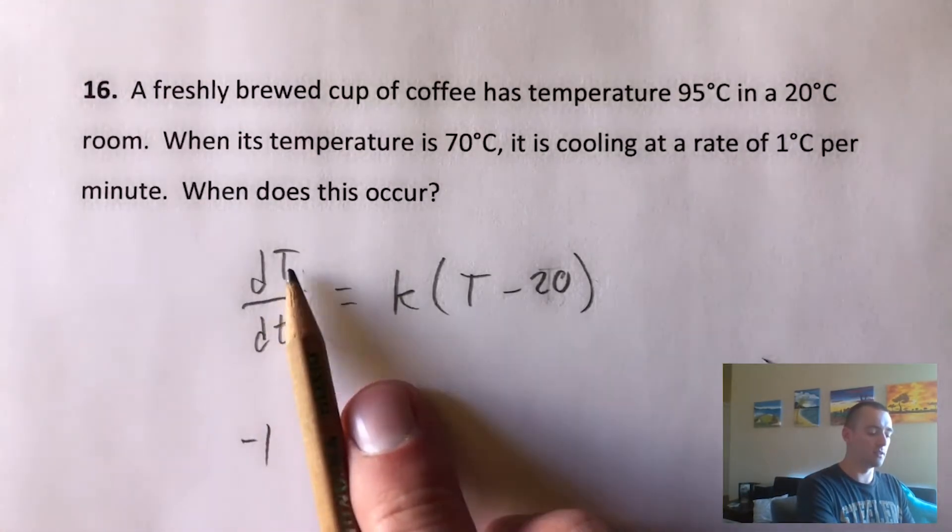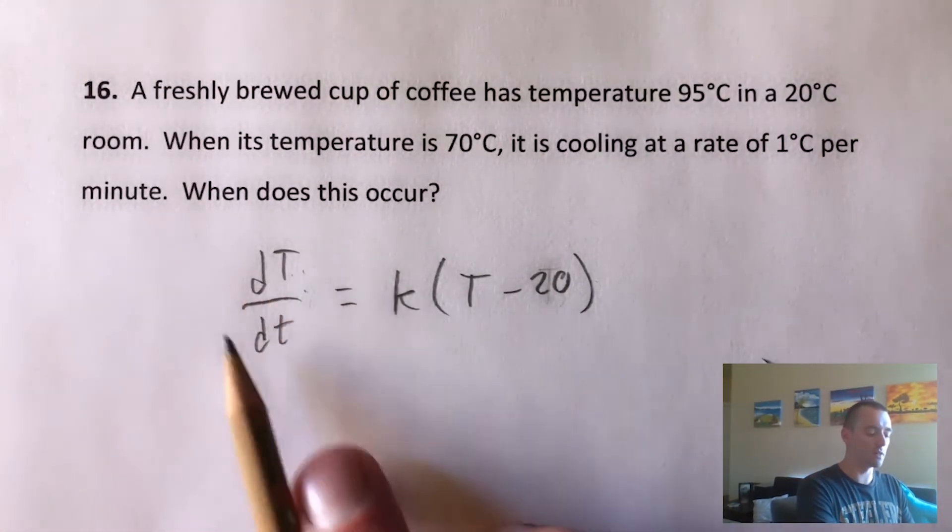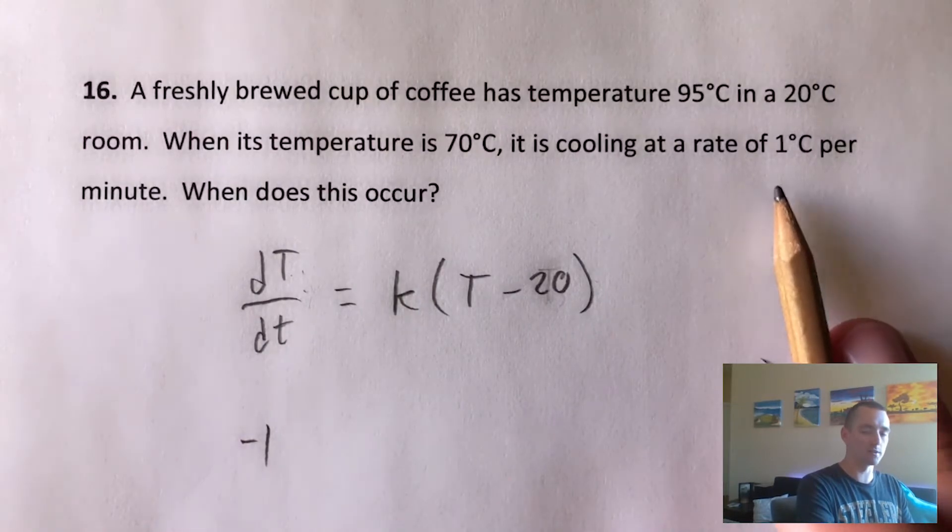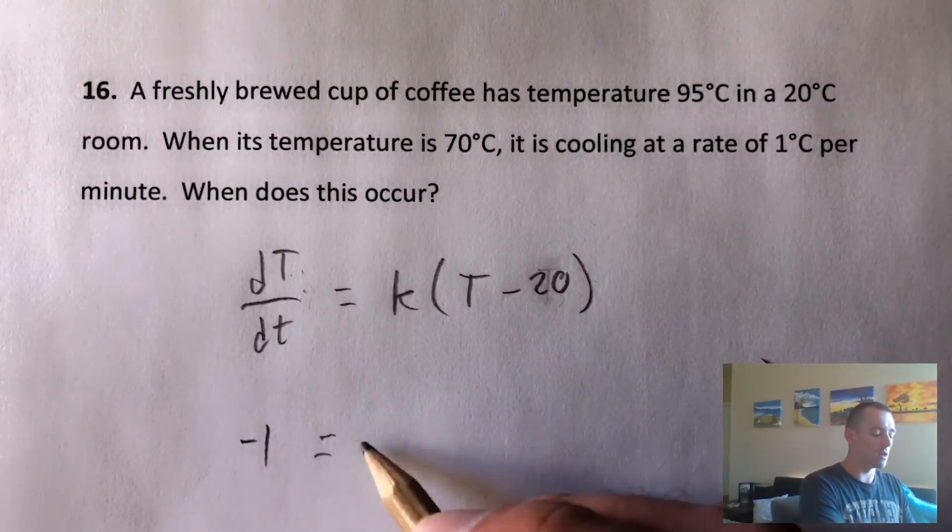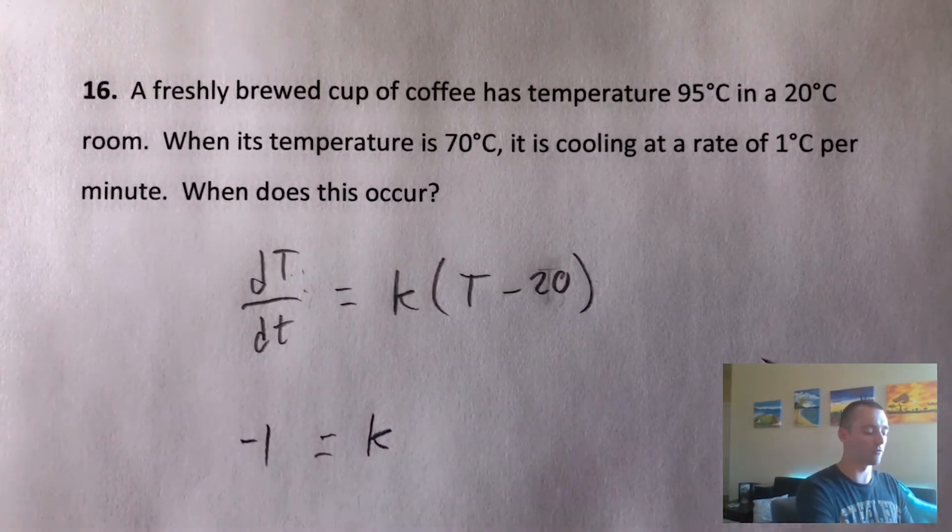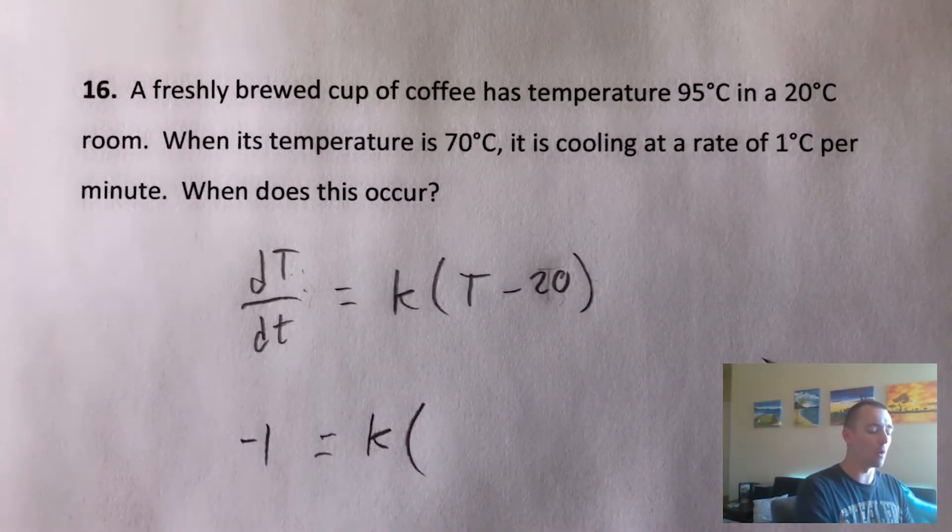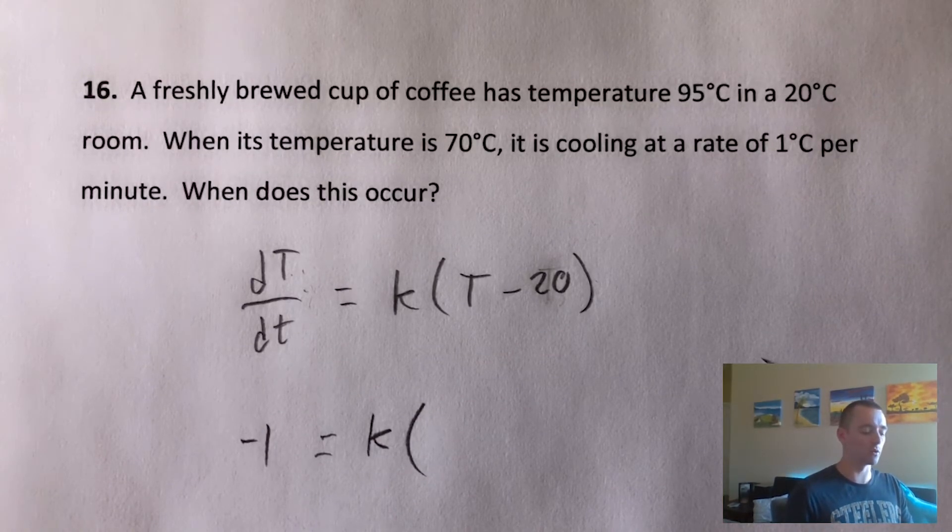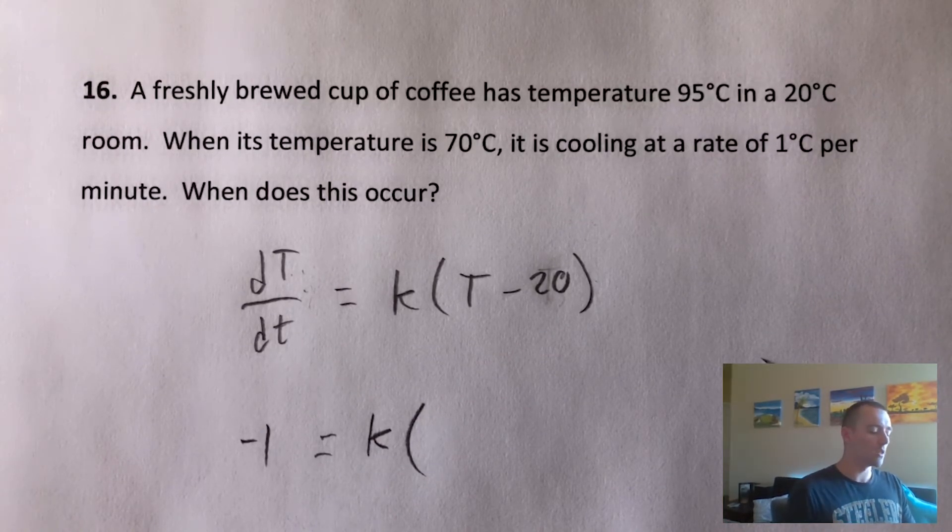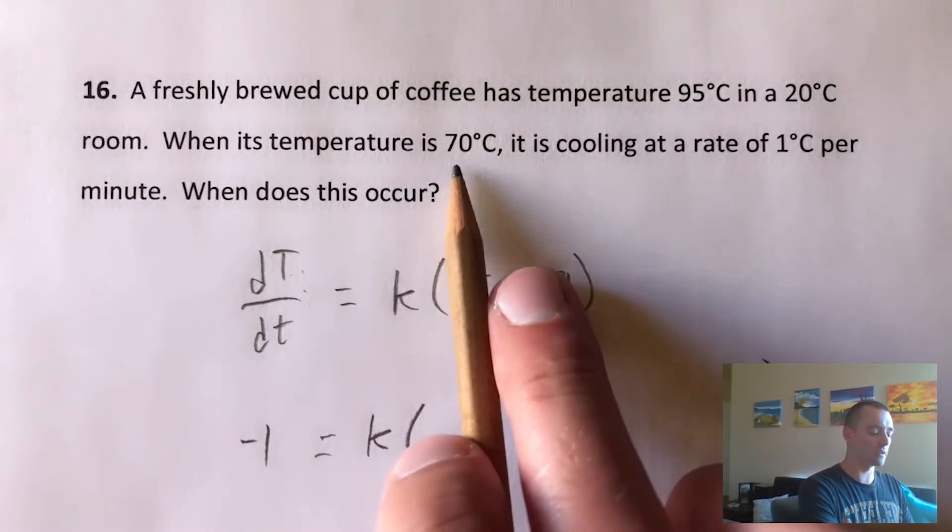And since this is temperature, this is time, this is exactly what they're saying with how fast it's cooling. Then this K is what we're trying to solve for. And we know at this moment when the rate of change is negative one degree, the temperature itself is 70 degrees. So if we plug in 70 there...